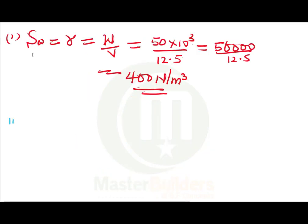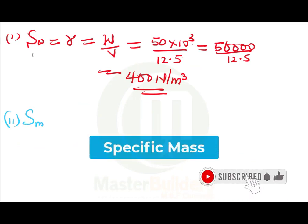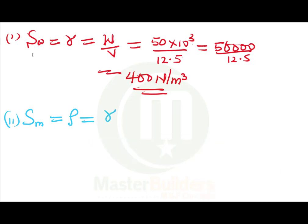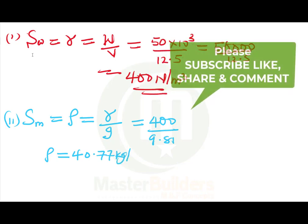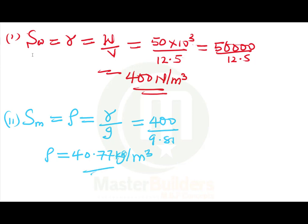Number two: specific mass, which is the same thing as density. Density ρ = specific weight / acceleration due to gravity. So ρ = 4,000 / 9.81. When we divide 4,000 by 9.81, our specific mass is equal to 40.77 kilograms per meter cube.